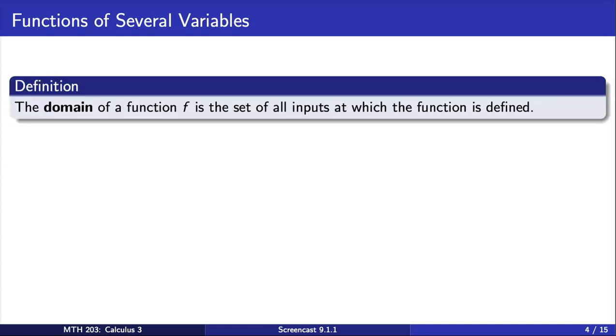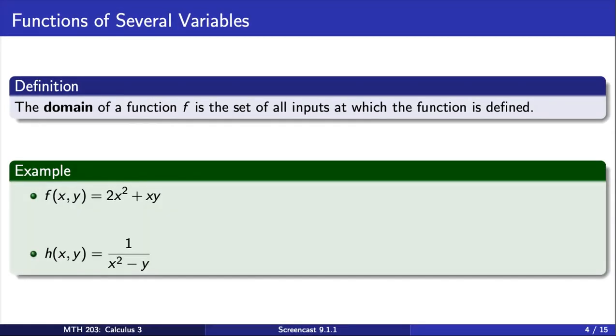As with functions of a single variable, it's important to understand the set of inputs. The domain of a function f is the set of all inputs for which the function is defined. As an example, consider the two variable functions f and h from before. Looking at the rule for f, we see it is defined for all ordered pairs (x, y) of real numbers. So the domain is going to be all ordered pairs of real numbers, which we can denote by R², which stands for two copies of the real numbers.